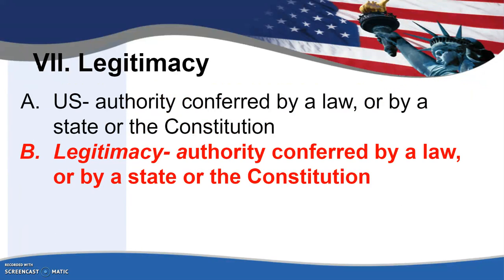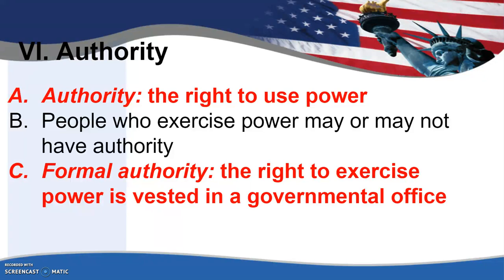When we're looking at politics, we're looking at legitimacy — the authority conferred by law. Our government's legitimacy comes from the Constitution. When we are looking at political authority, we're looking at the right to use power, and people who use power may or may not actually have authority. If we look to that speech writer again, that is not someone who has the authority to insert their decisions on the public, and yet that happens. Formal authority is the right to exercise power that is vested in a governmental office.